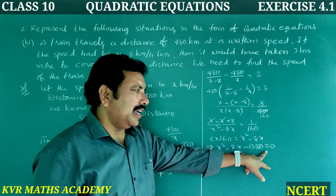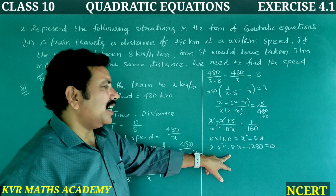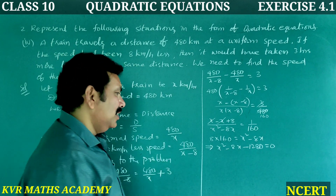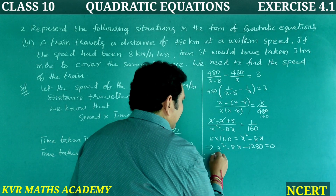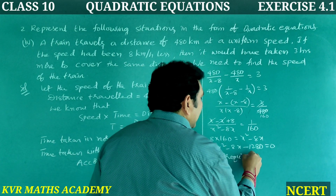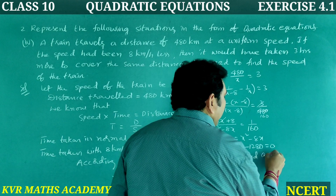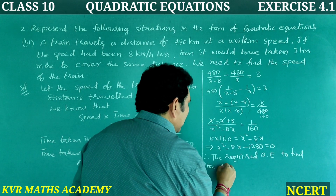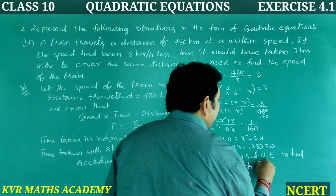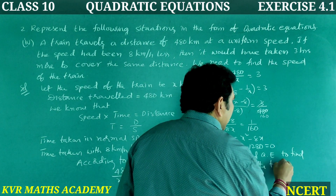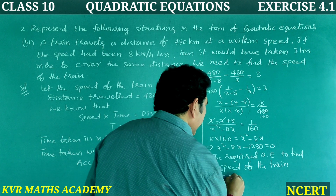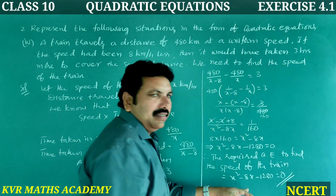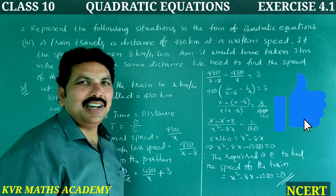So the required quadratic equation to find the speed of the train is X² − 8X − 1280 = 0. Therefore the required quadratic equation to find the speed of the train is X² − 8X − 1280 = 0. Have you understood clearly?